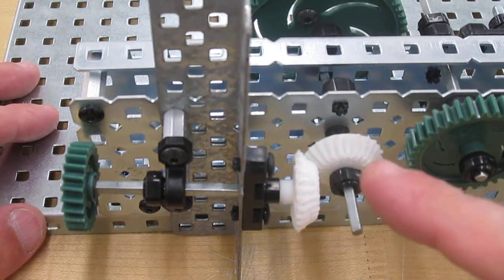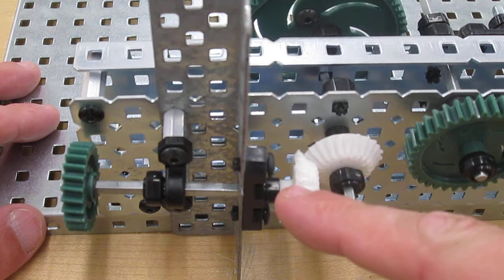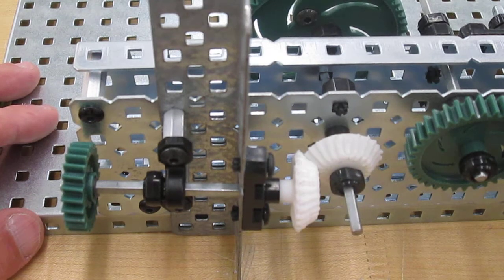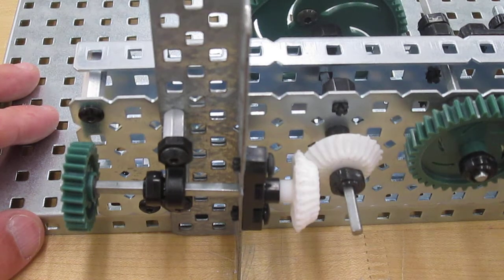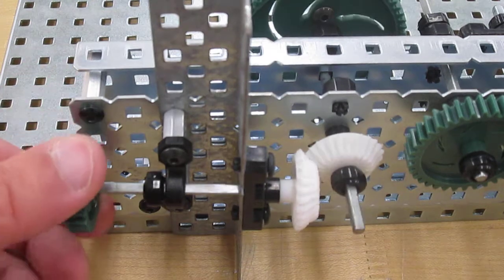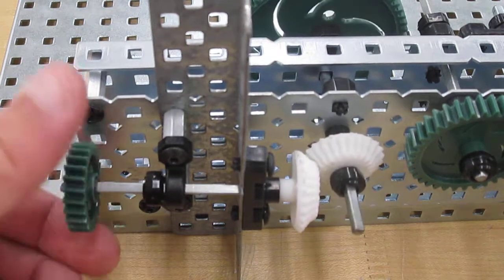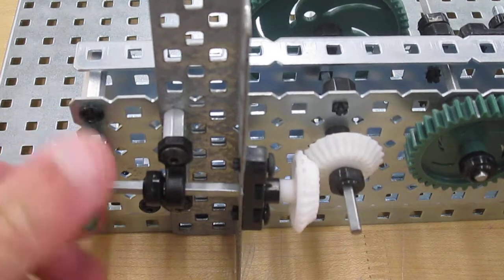We're going to look at the bevel gears which are these two gears here attached at a 90 degree angle from one another. The bevel gears will turn each other and form a 90 degree angle.